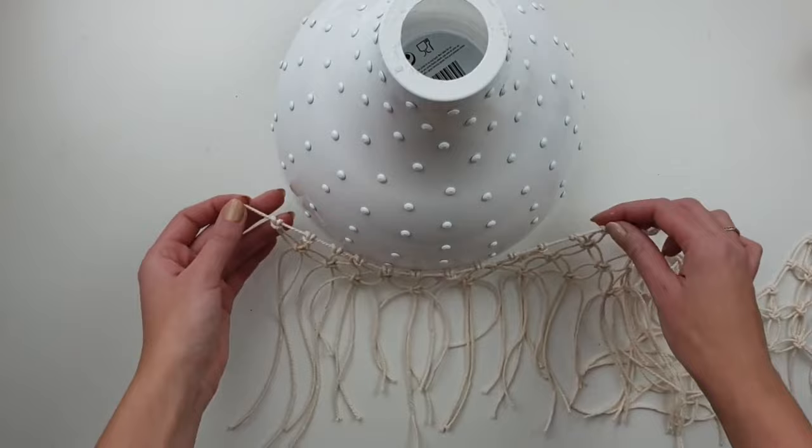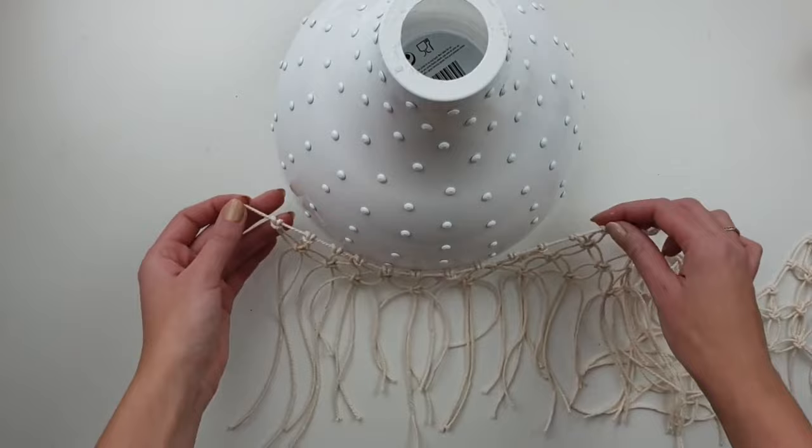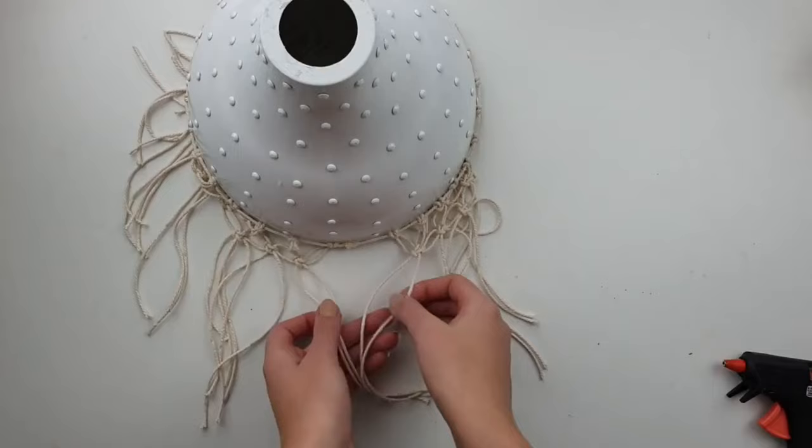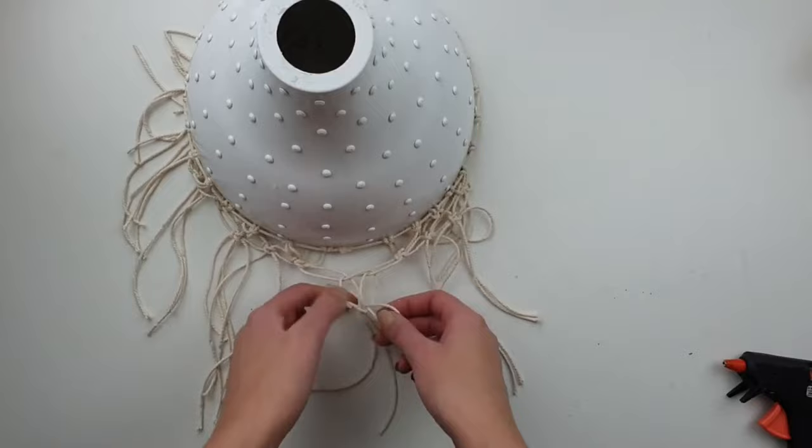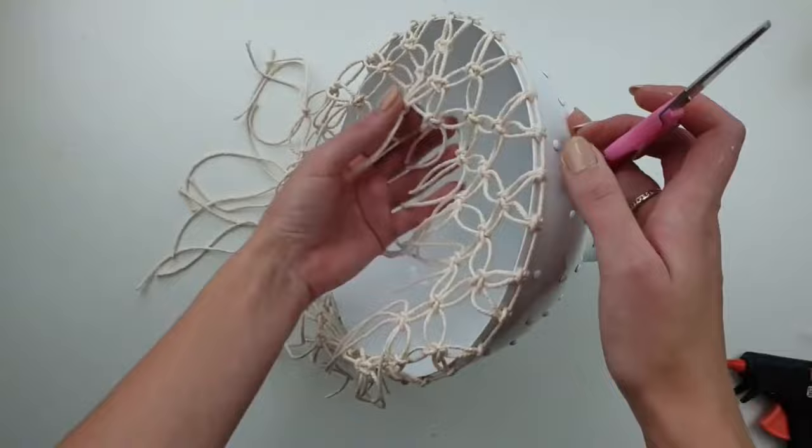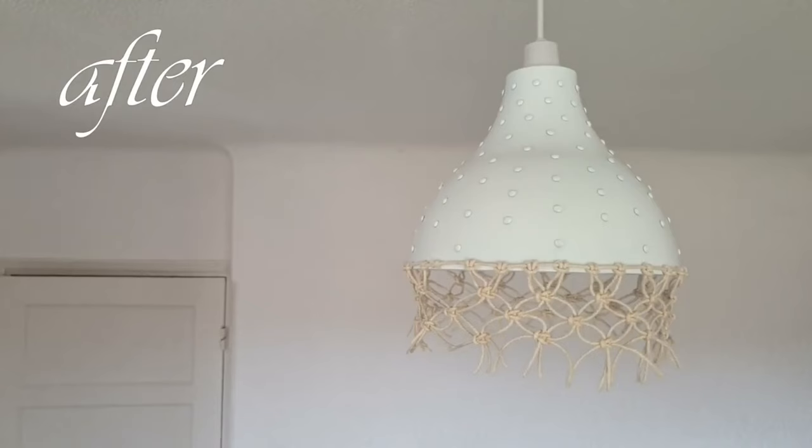All together I've created three rows, and now I will attach it to the bottom of my lampshade with hot glue. To finish this design off, I have to create another square knot which will connect two ends of my net. I cut off the excess rope to the same length and my new lampshade is ready.